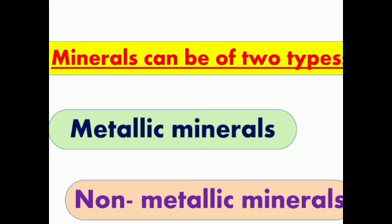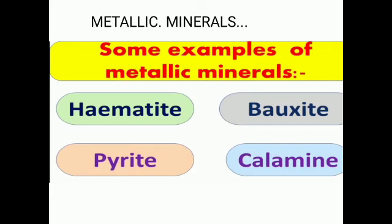First is metallic minerals. The minerals from which useful metals can be extracted are called metallic minerals. They are dug out from mines and processed to obtain matter. Some useful metals can be properly obtained from metallic minerals called ores, such as hematite, bauxite, pyrite and calumene. We get iron, aluminium, copper and zinc respectively from these ores.